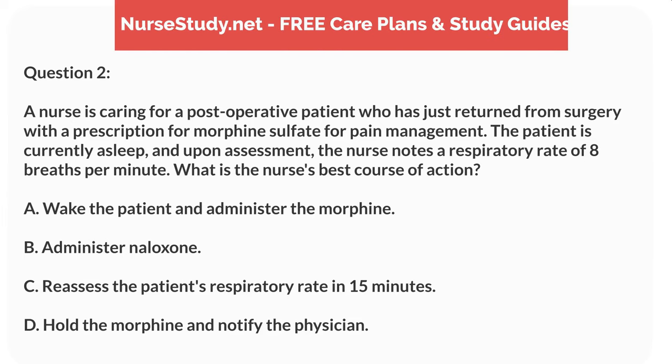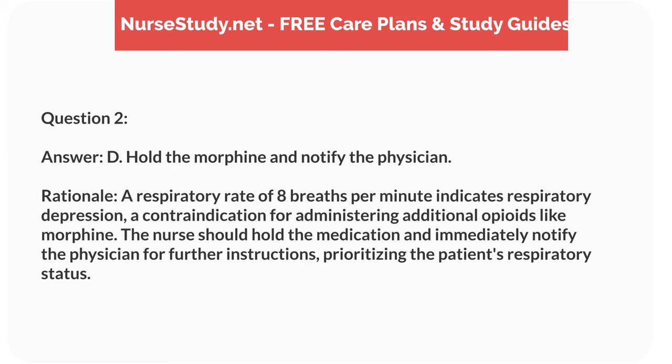Question 2. A nurse is caring for a post-operative patient who has just returned from surgery with a prescription for morphine sulfate for pain management. The patient is currently asleep, and upon assessment, the nurse notes a respiratory rate of 8 breaths per minute. What is the nurse's best course of action? A. Wake the patient and administer the morphine. B. Administer naloxone. C. Reassess the patient's respiratory rate in 15 minutes. D. Hold the morphine and notify the physician. Answer: D. Hold the morphine and notify the physician. Rationale: A respiratory rate of 8 breaths per minute indicates respiratory depression, a contraindication for administering additional opioids like morphine. The nurse should hold the medication and immediately notify the physician for further instructions, prioritizing the patient's respiratory status.